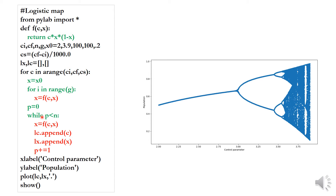We then enter a while loop: while p is less than n. Inside the loop, x is updated as x equals f(c, x), which means x equals c times x times (1 minus x). Each step computes the next attractive point. We collect these attractive points into our results list for the corresponding value of c.